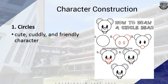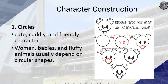A simple cartoon character is made up of three basic shapes: the circle, the square, and the triangle. Starting with circles: circles are used to create cartoon characters that are cute, cuddly, and friendly. Women, babies, and fluffy animals usually depend on circular shapes. For example, if you want to create a cute little bear or mouse character, you just need to use several circles.